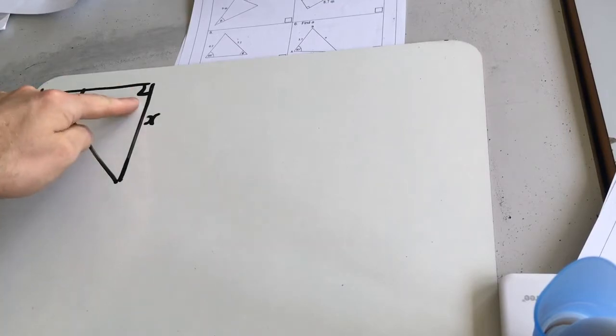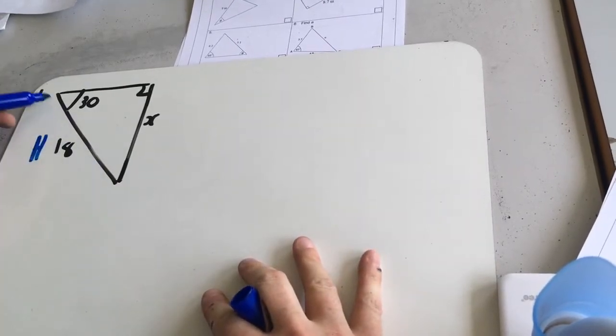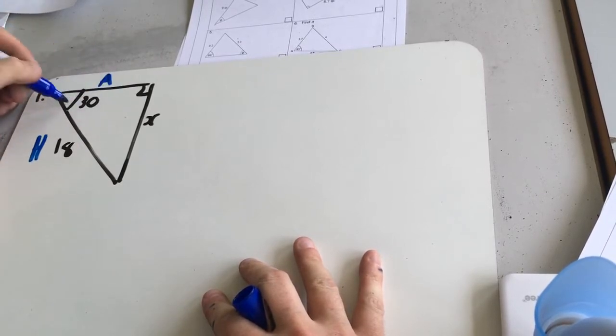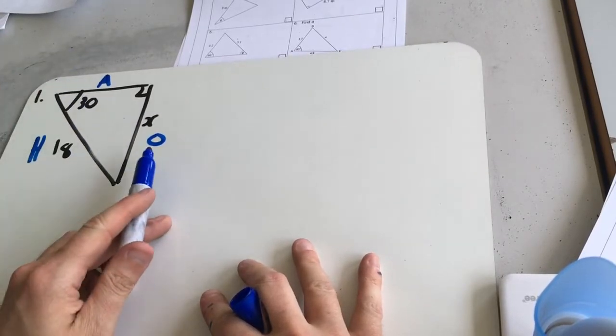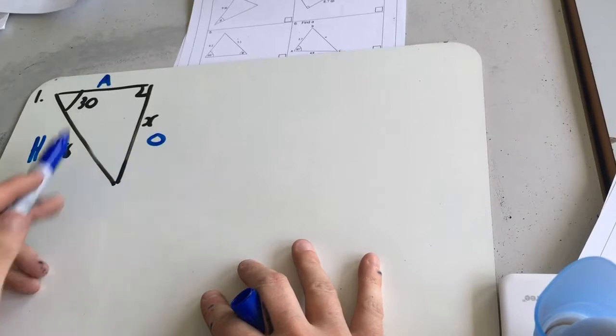For this one we've got right angle triangles, so I know straight away it's going to be SOHCAHTOA or Pythagoras. And we've got one angle, one side and one unknown side, so it's got to be a SOHCAHTOA question. So I'm going to go ahead and label each of my sides. So here's my hypotenuse because it's the longest side. Here's my adjacent because it's between the hypotenuse and the angle. And here's my opposite because it's opposite the angle that we know. So we want to find the opposite. We know the hypotenuse so it's going to be a sine question.